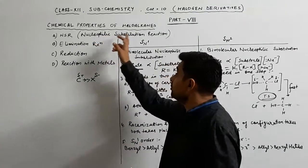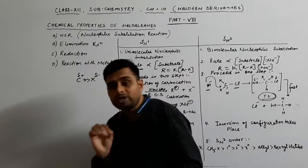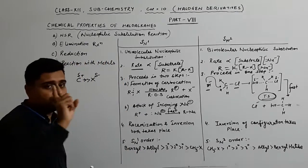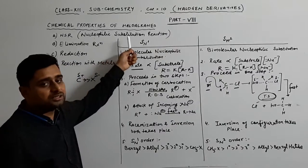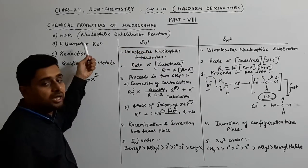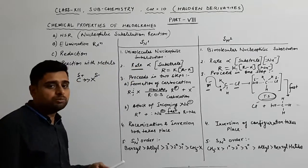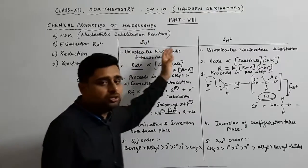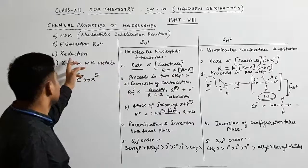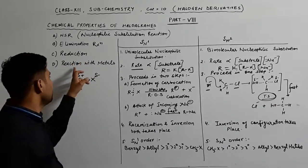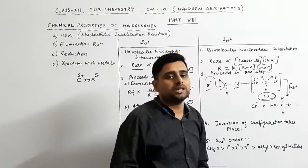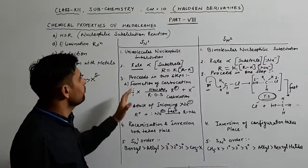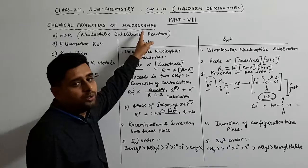The chemical properties of haloalkanes occur in four ways. First is Nucleophilic Substitution Reaction (NSR). Second is Elimination Reaction. Third is Reduction. And fourth is Reaction with Metal. These are the four methods to form other products from haloalkanes.